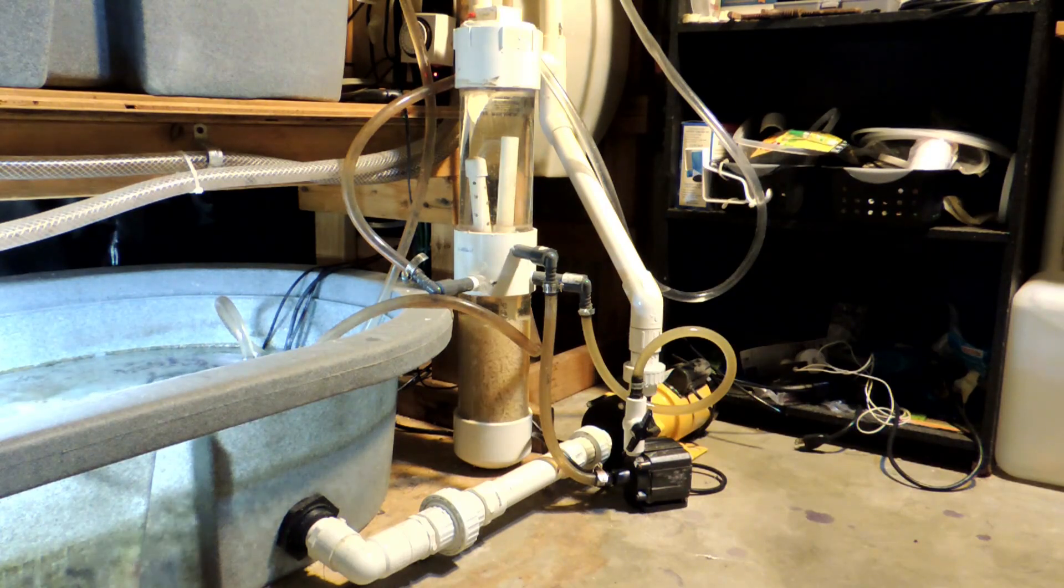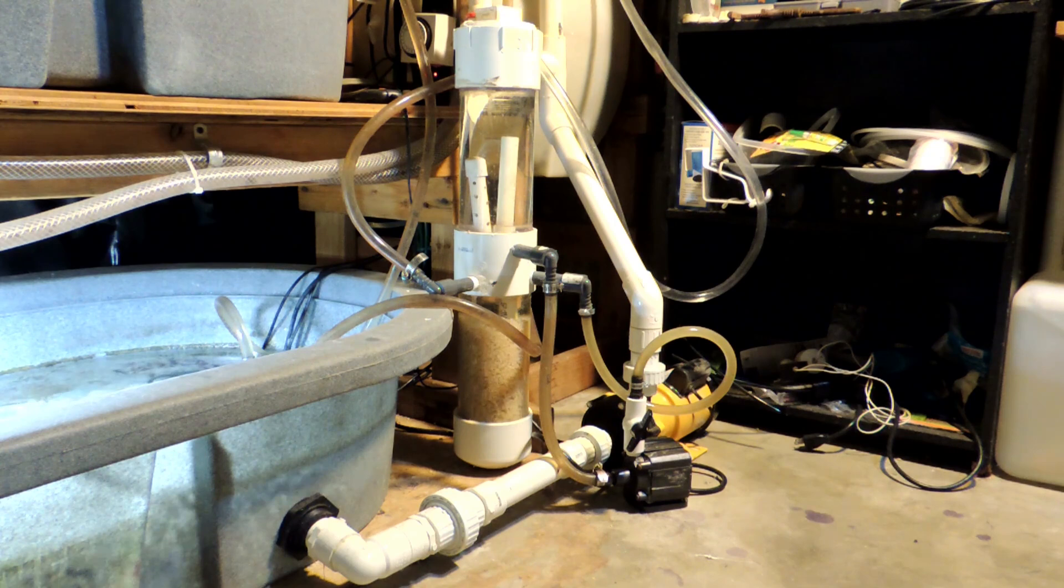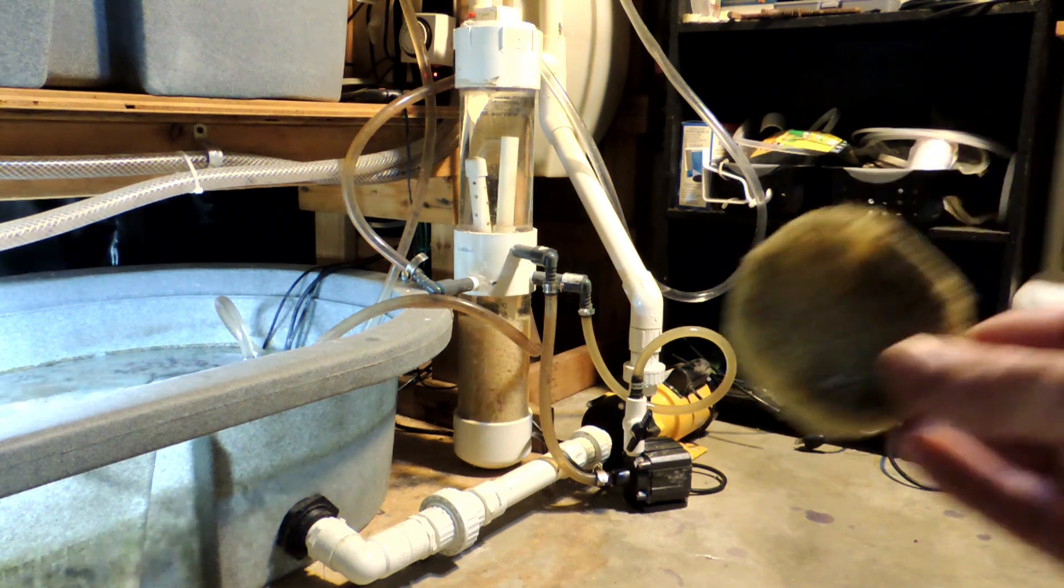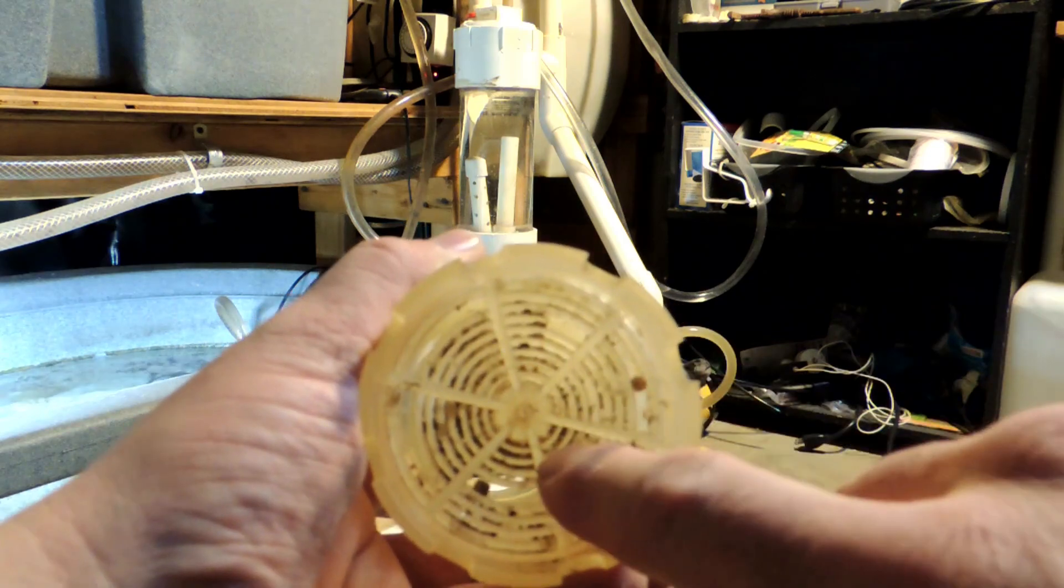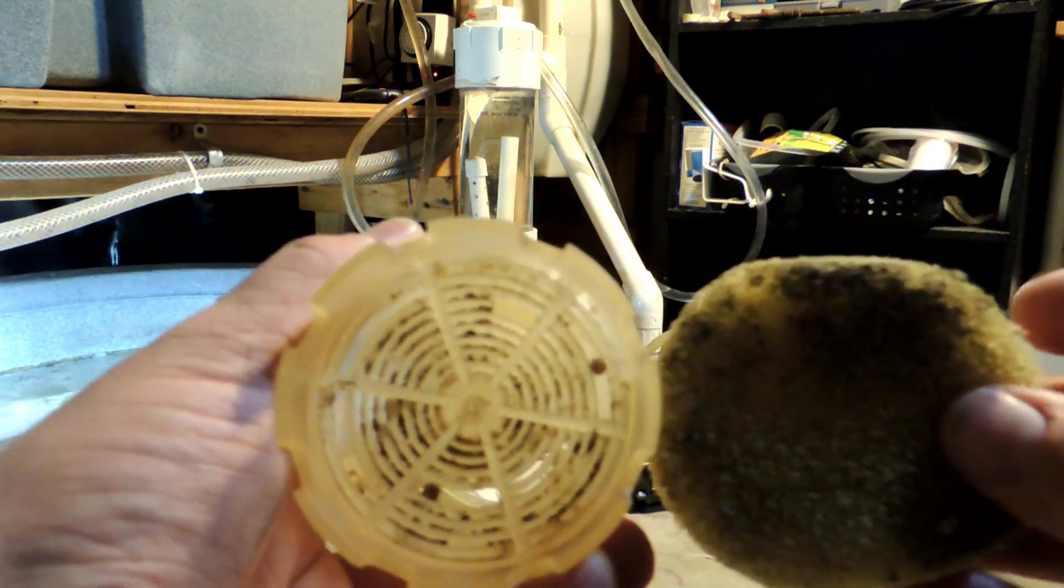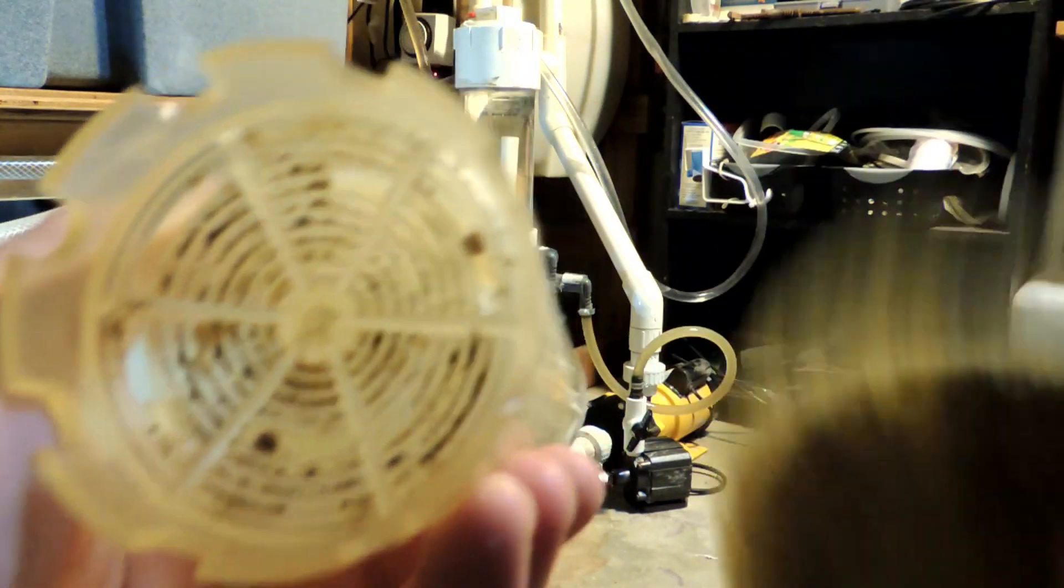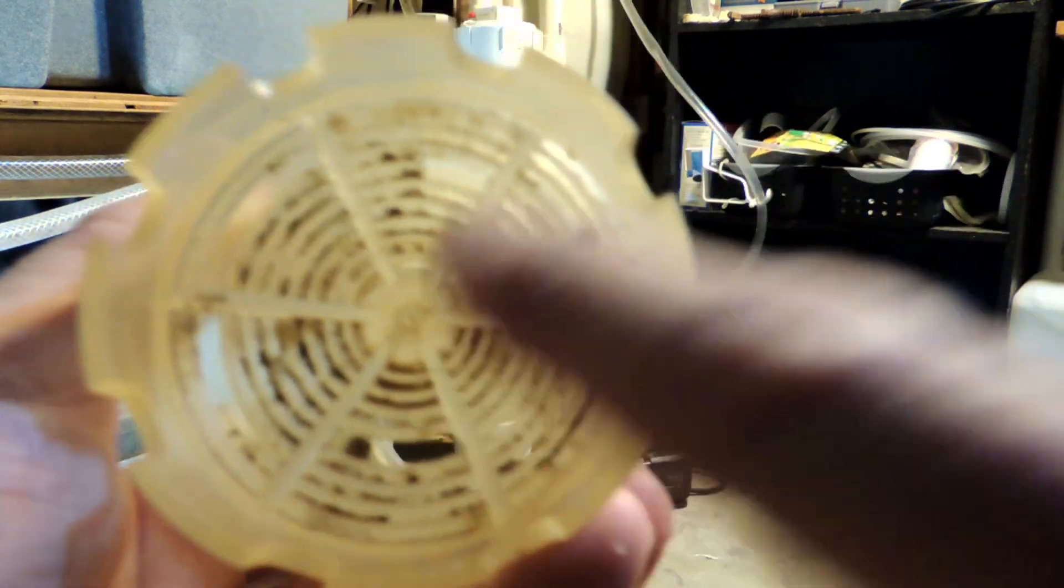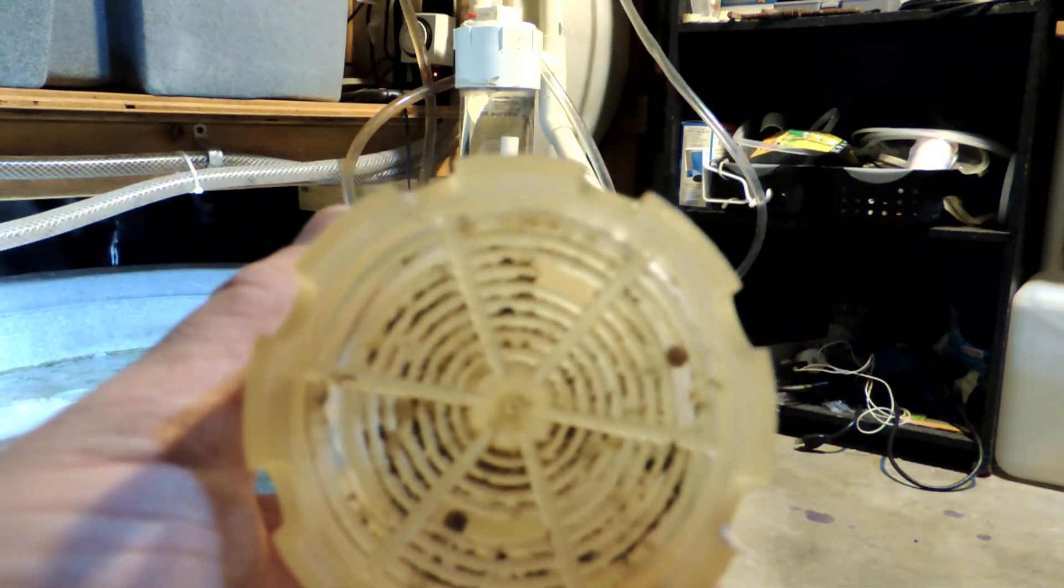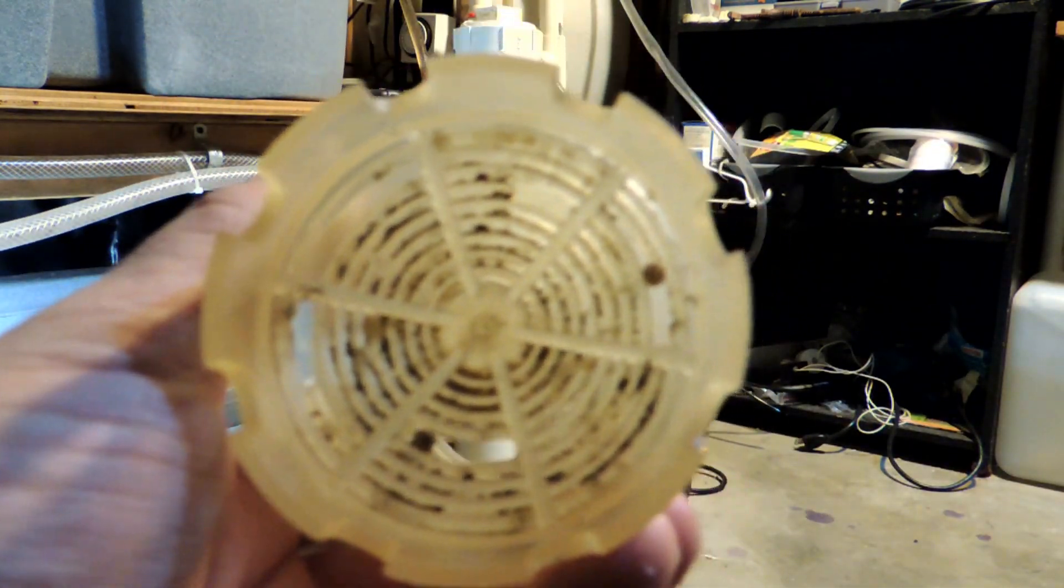You may recall a while back, I made a couple videos on my bulk reef supply Bio Pellet Reactor. And there were some pretty big pitfalls with that thing. And the biggest pitfalls were, it uses a sponge, and then it has a tube on the bottom here with a lot of slots in it that clog up. And you can see, this thing is just really dirty and nasty. I gave up on that. I was switching this out all the time. I was cleaning these out.